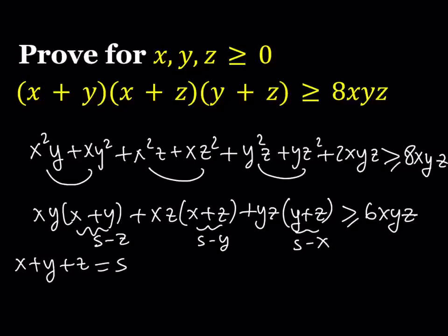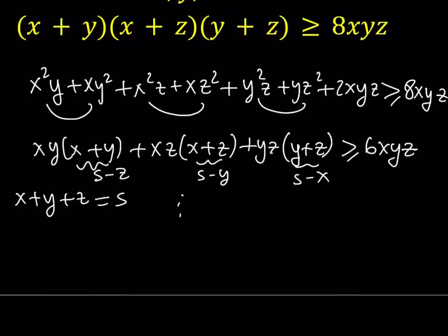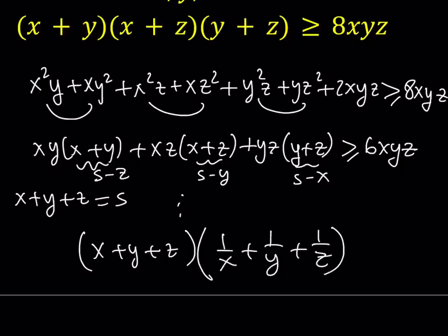And then by distributing and replacing s with x plus y plus z, this is going to lead you to an inequality that I proved a while ago. x plus y plus z multiplied by 1 over x plus 1 over y plus 1 over z is greater than or equal to 9. Obviously here x, y, z cannot be 0, but you can modify it to fit our problem.